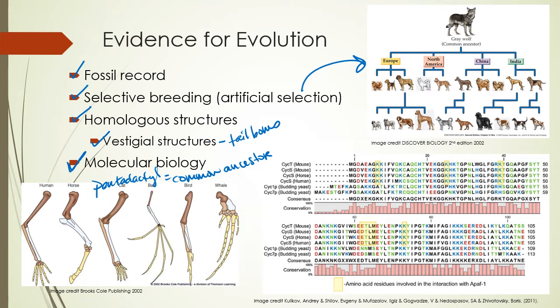Molecular biology is really the best piece of evidence for evolution. This table shows the amino acid sequence for a protein called cytochrome c, which is involved in metabolism and cellular respiration. We have mice, horses, humans, and yeast — a fungus — and we can see that a lot of the amino acids in this protein are very similar, maybe only a few differences. That similarity in amino acid sequence provides evidence of a common ancestor.